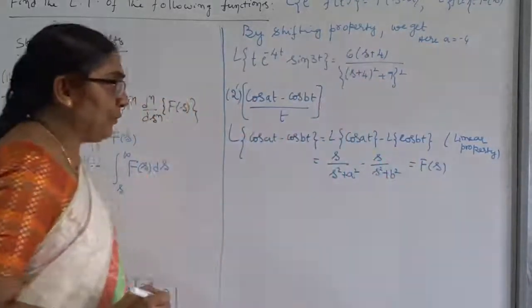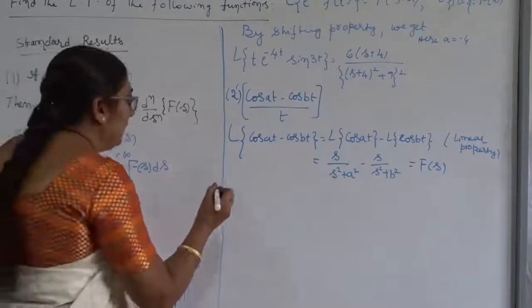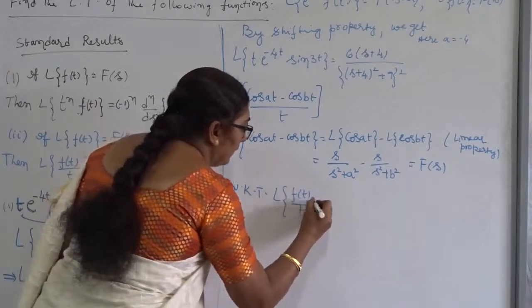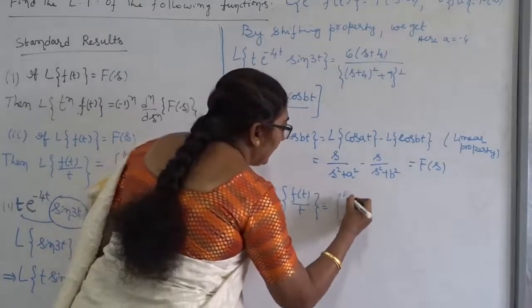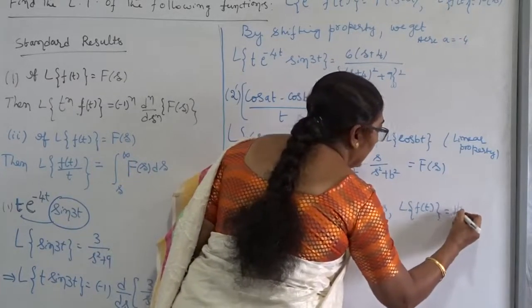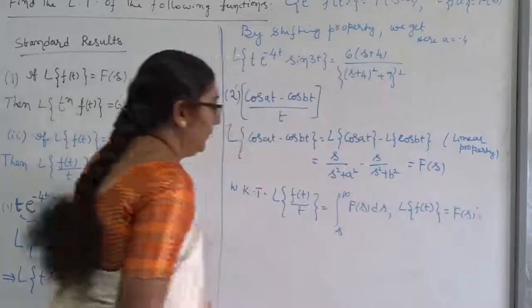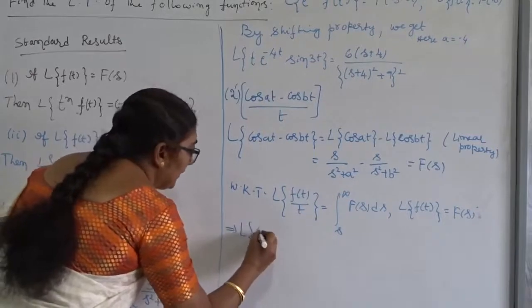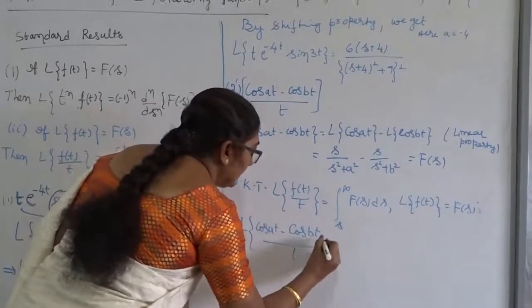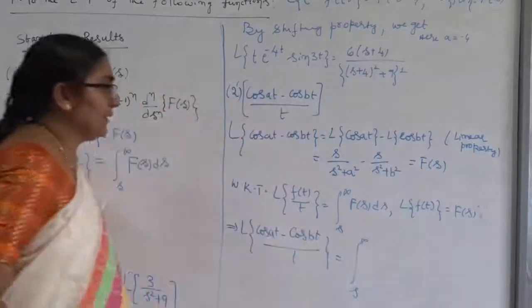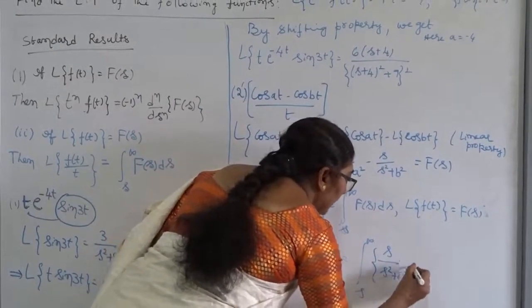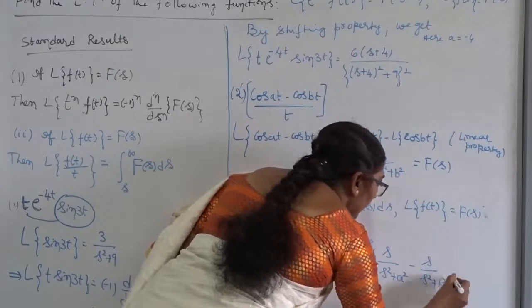Before moving to the next step, we write the result first. We know that the Laplace Transform of f(t) divided by t is the integral from s to infinity of capital F(s) ds. This implies the Laplace Transform of (cosAt minus cosBt) divided by t is the integral from s to infinity of [s/(s² + A²) minus s/(s² + B²)] ds.